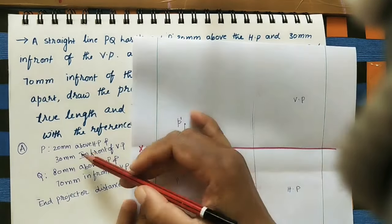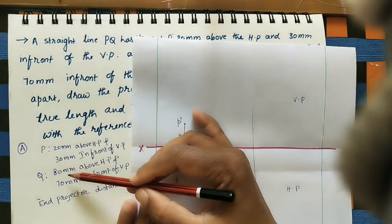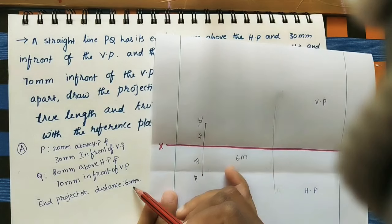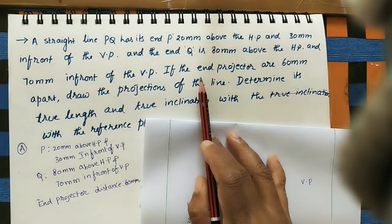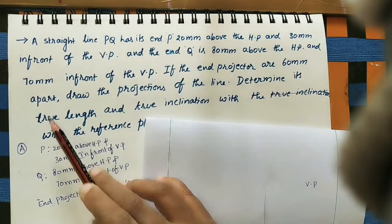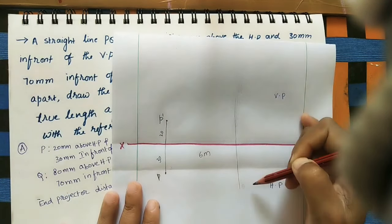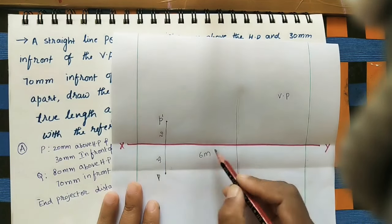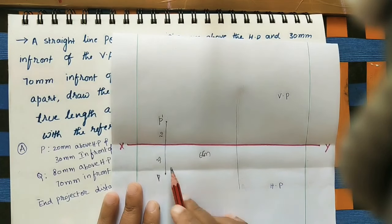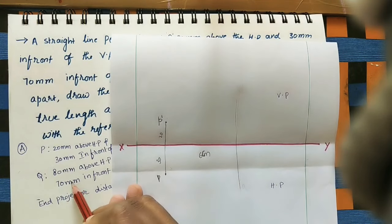After marking P-dash and p position, the Q position is also given. Before marking Q, note that the end projector distance is 60 mm, which is 6 centimeters, as given in the problem. P-dash-p is one projector, and Q-dash-q also comes on the same vertical line. The distance between these two projectors is 6 centimeters, so mark 6 centimeters from the first projector line and draw the second projector line.